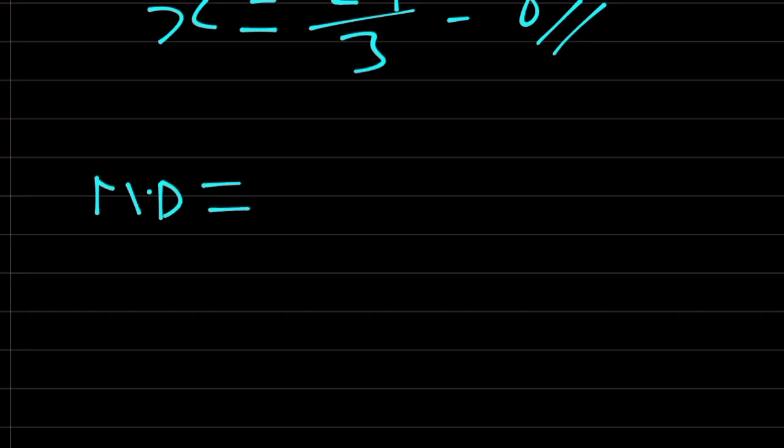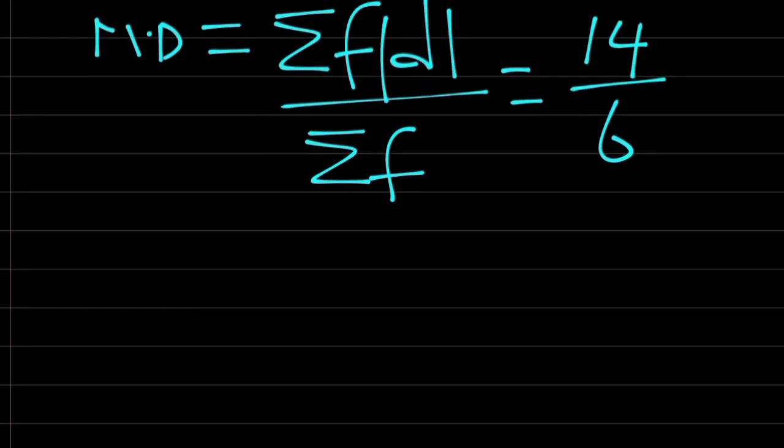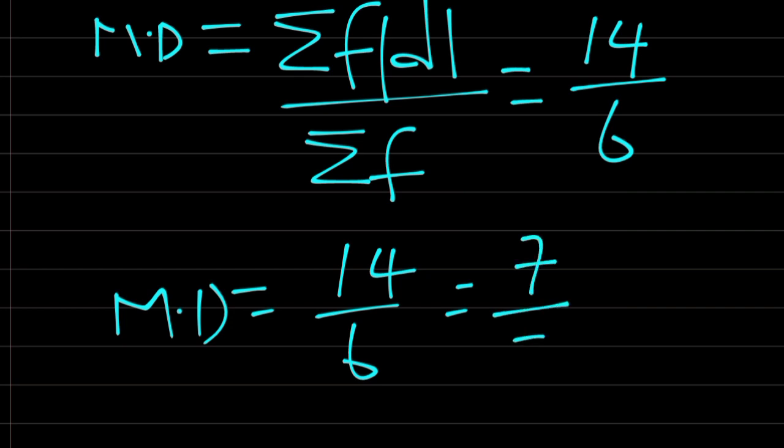Mean deviation is equal to summation of f of d over summation of f. Summation of f of d is 14 and our summation of f is 6. Therefore, we have our mean deviation to be equal to 14 over 6. Divide by 2, 2 can go in 14. We have 7 over 3.